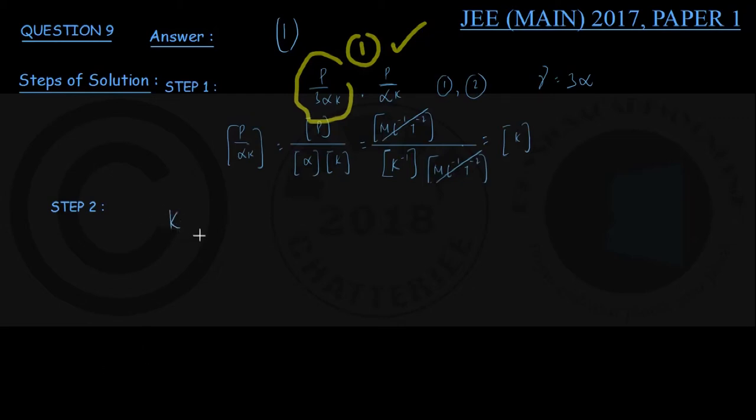Bulk modulus of cube material is K, given by volume stress by volume strain. If the pressure increase is P, the corresponding volume stress—that is, compressive stress—is minus P. Volume strain is change in volume by original volume. From here we get delta V by V equals minus P by K, and delta V equals minus P times V by K.